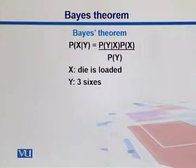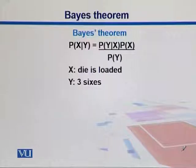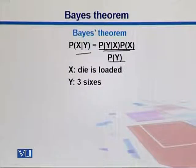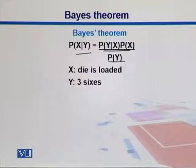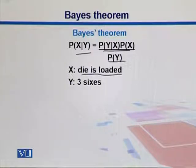Here is the formal equation for Bayes theorem: P(X|Y) = P(Y|X) × P(X) / P(Y). If you know three of these values, you can calculate the fourth. For example, X can represent that the die is loaded, and Y is your observation — three sixes.